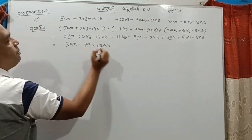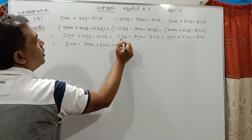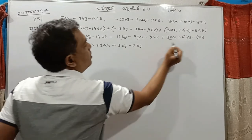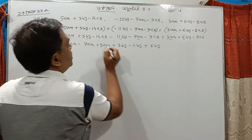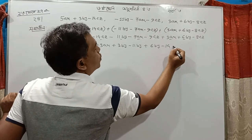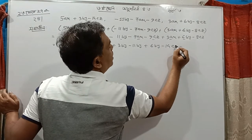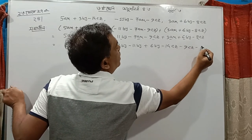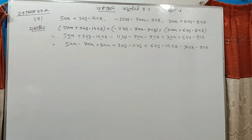Next, by is going to be plus 3by. That's the value of minus 11by. And by is going to be plus 6by. Next, z is going to be minus 14cz. Then minus 9cz. By the way, minus 8cz. Now we move towards 2b. This is minus 8cz.